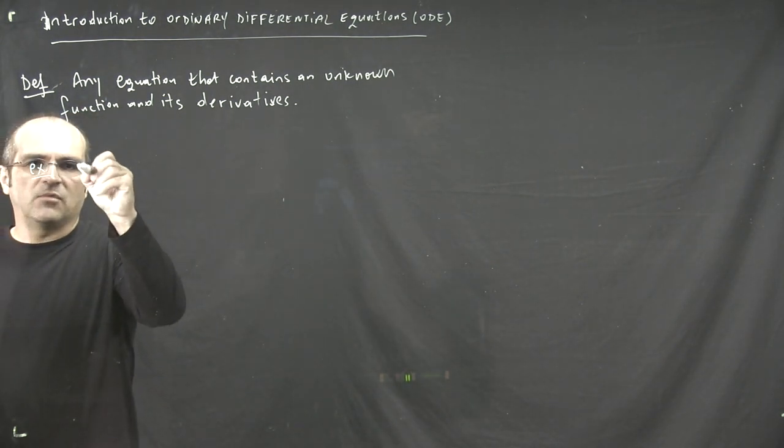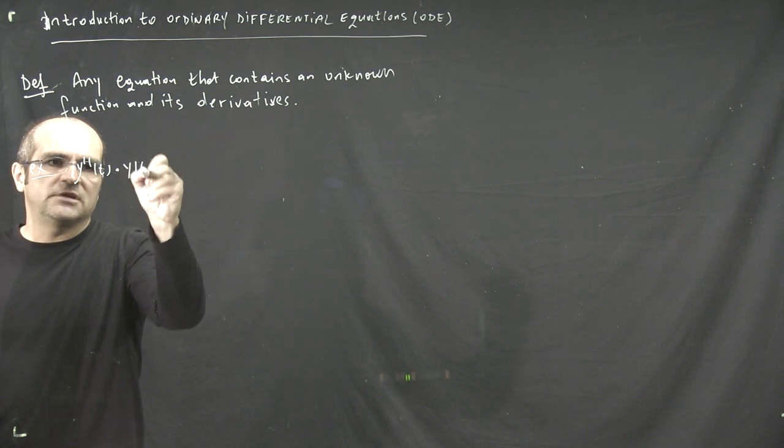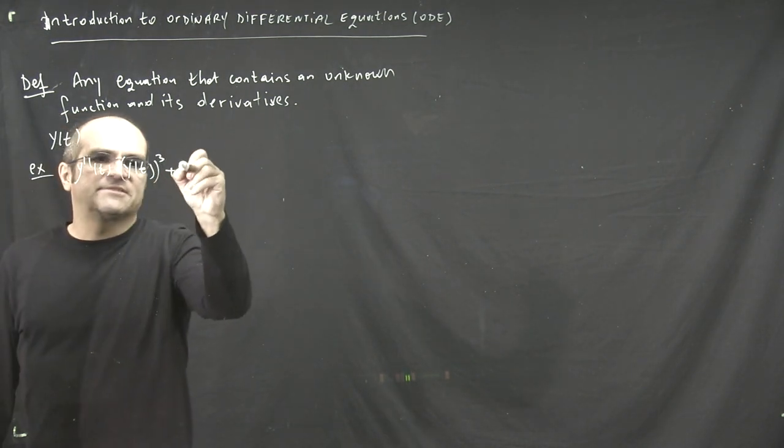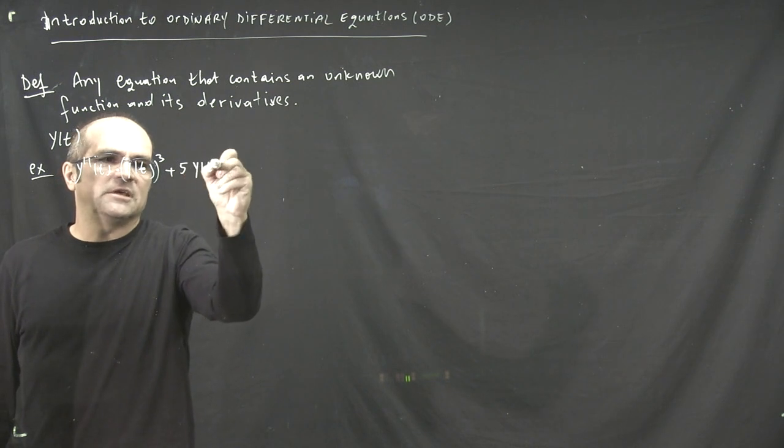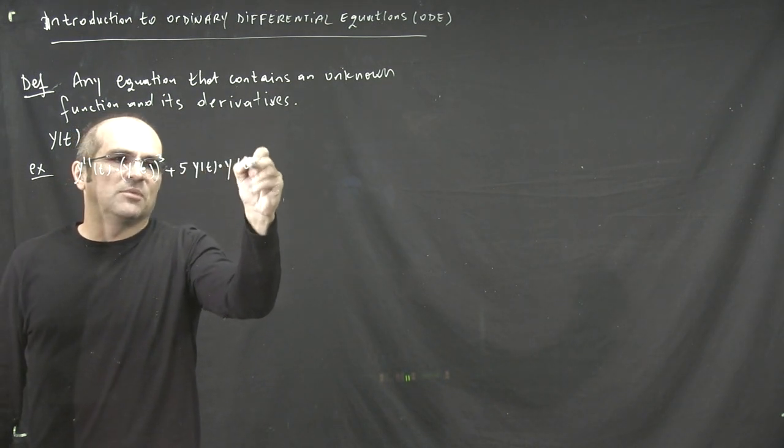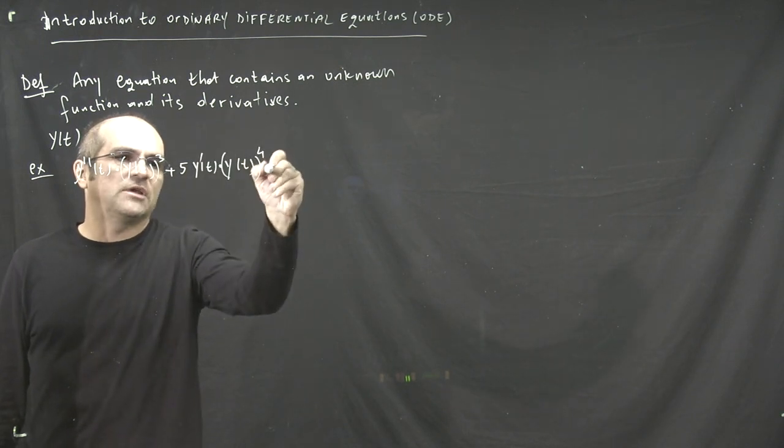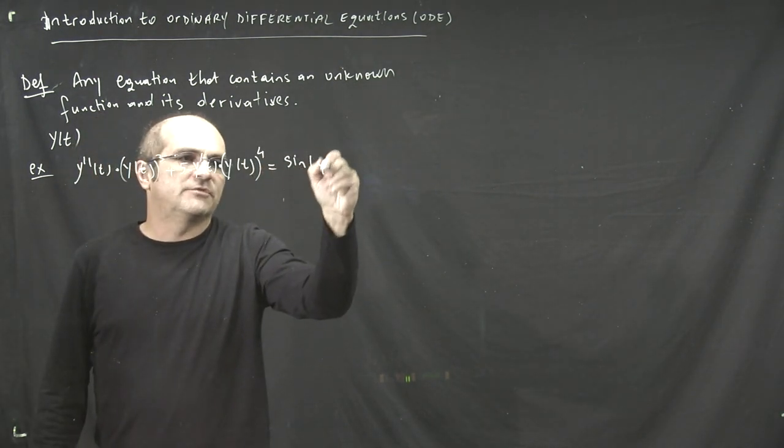Let's say y double prime of t times y of t to the power 3 plus 5 times y of t times y prime of t to the power 4 - or let's put the prime here - y of t to the power 4 equals sine of y of t.